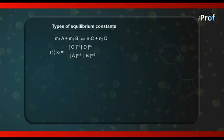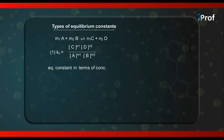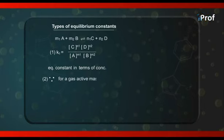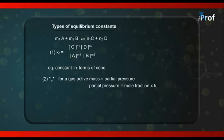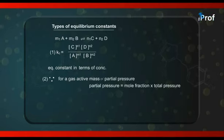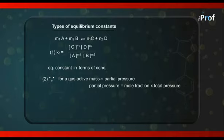Then we have another type of equilibrium constant, especially for gaseous reactions. For a gas, its active mass is proportional to its partial pressure, and partial pressure is mole fraction into total pressure. So when active mass is proportional to partial pressure and the reaction is a gaseous one, the equilibrium constant can be written as Kp — obviously the equilibrium constant in terms of pressure or partial pressure.